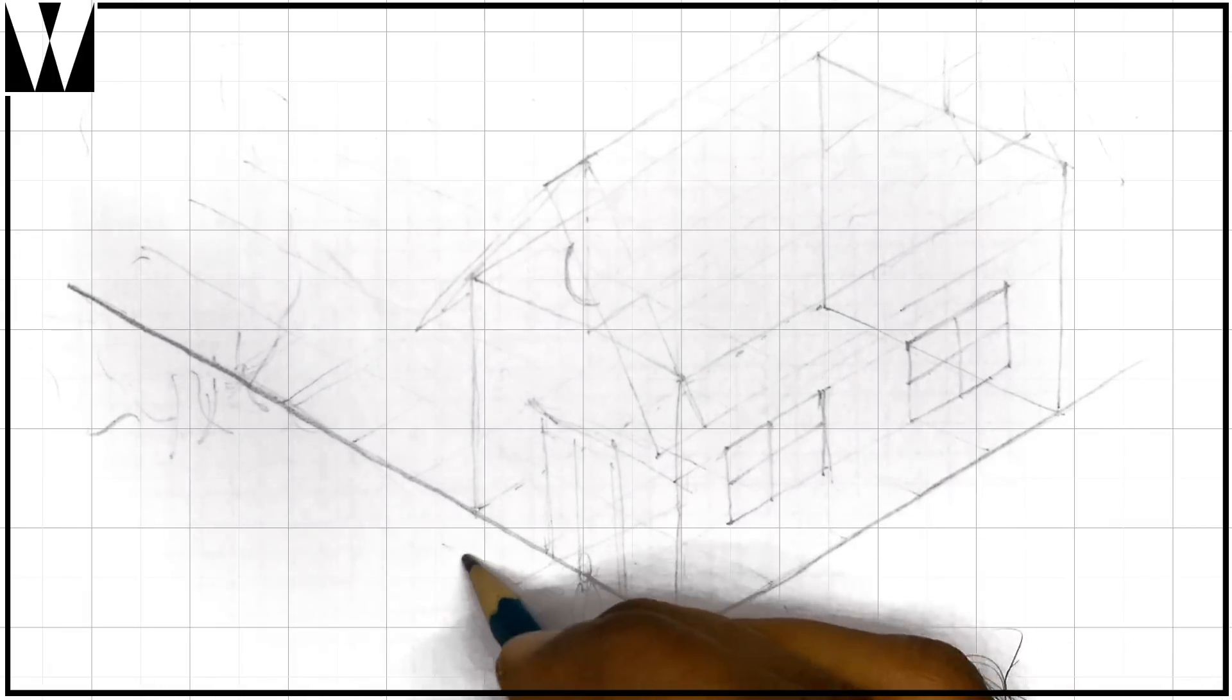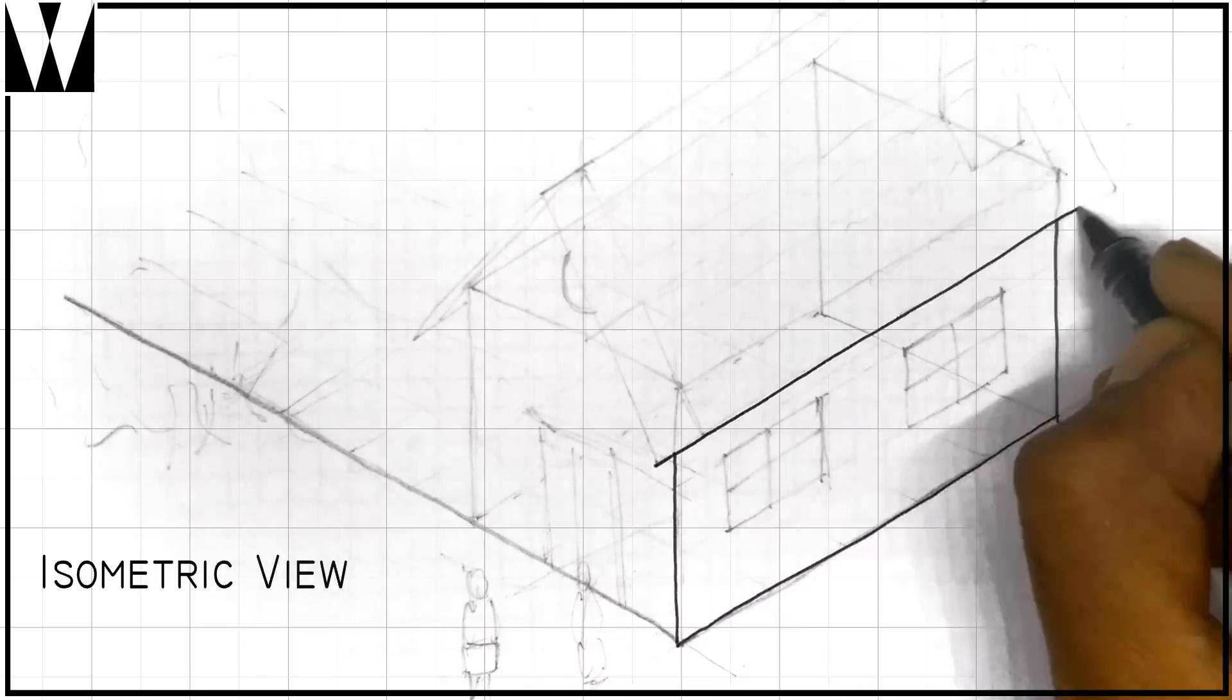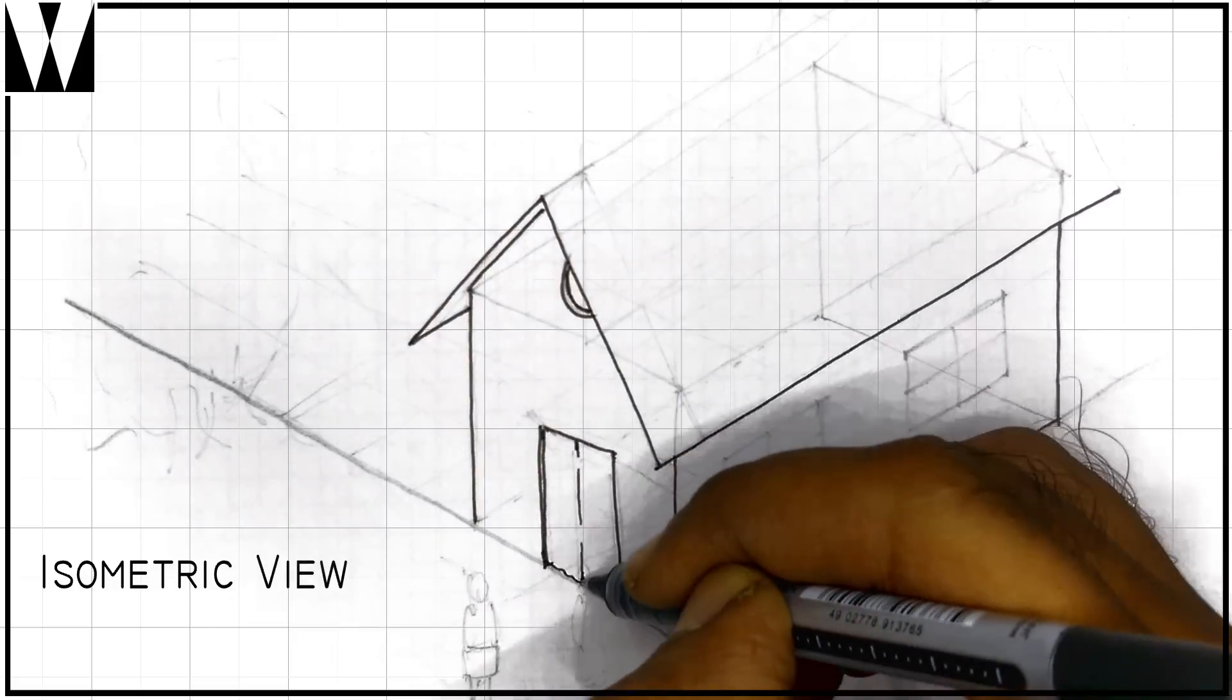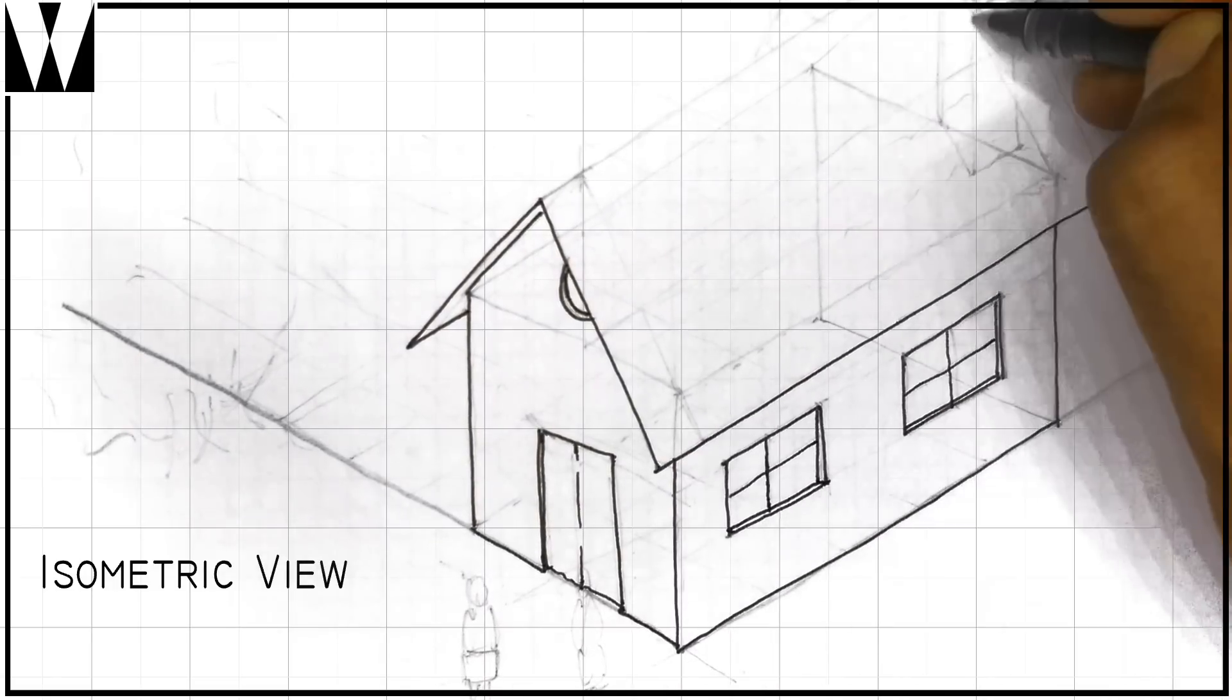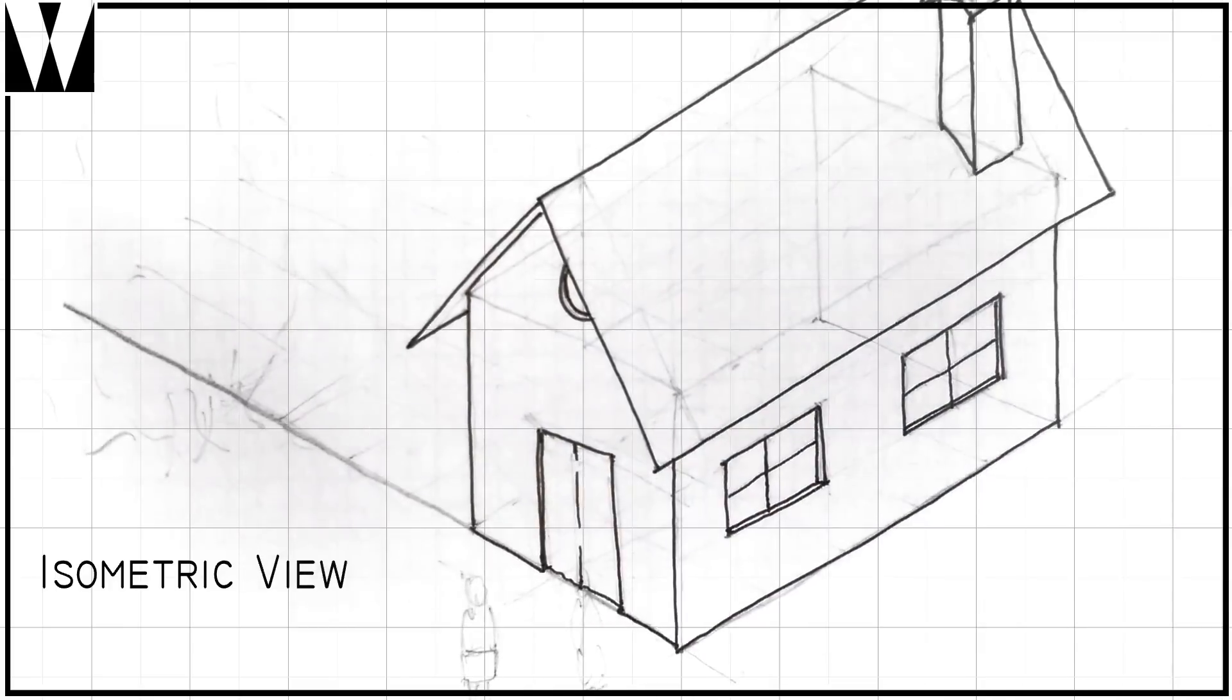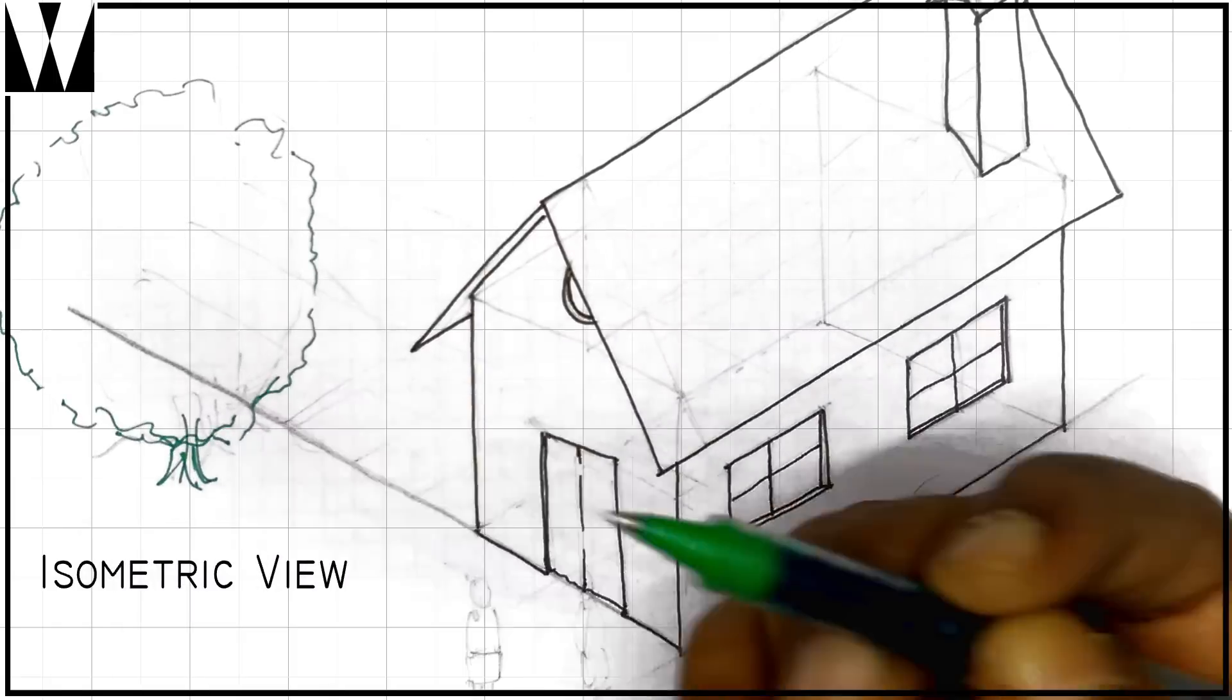So this drawing is what we call an isometric view, when the grid is drawn at 30 degrees. There's another drawing type called an axonometric view, when the angle is drawn at 45 degrees, which I won't sketch now but it's kind of easy to imagine. With this drawing here, we understand the shape and form of the house.